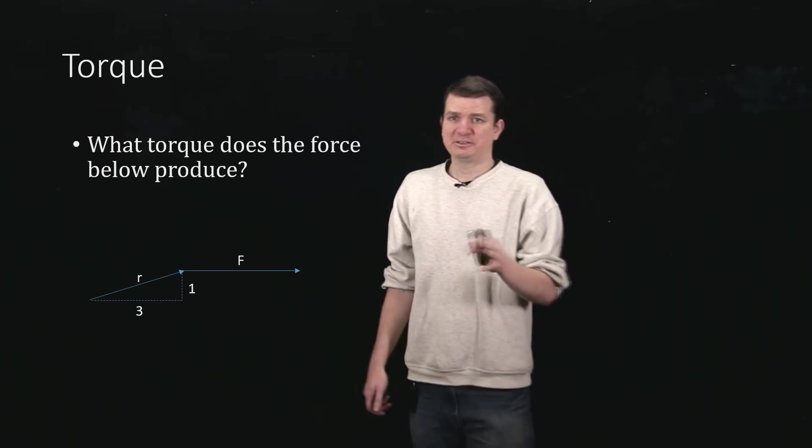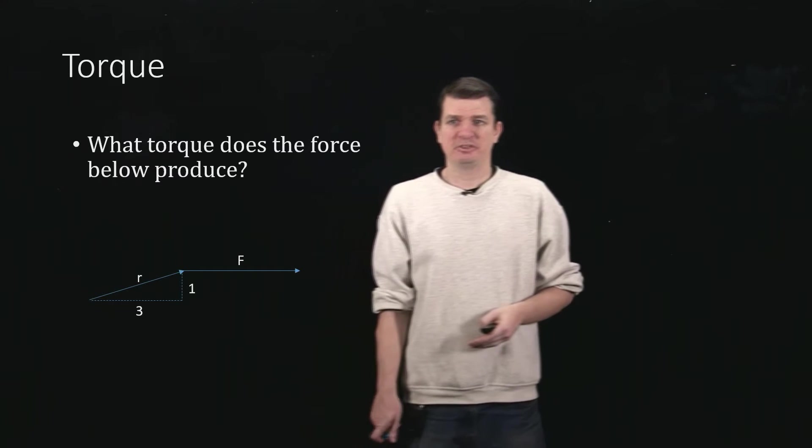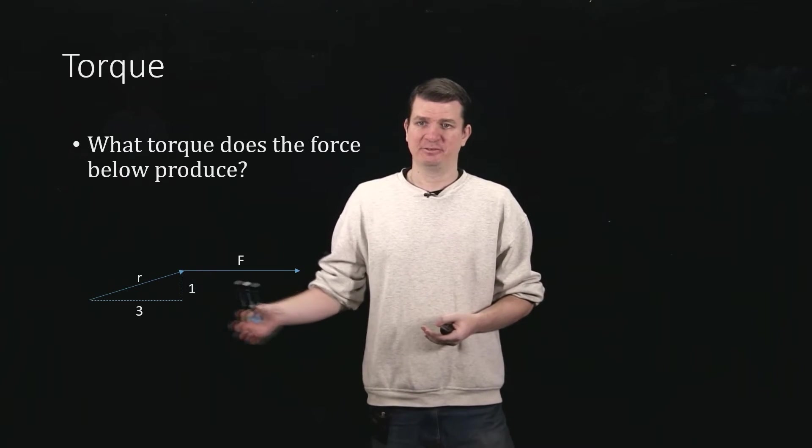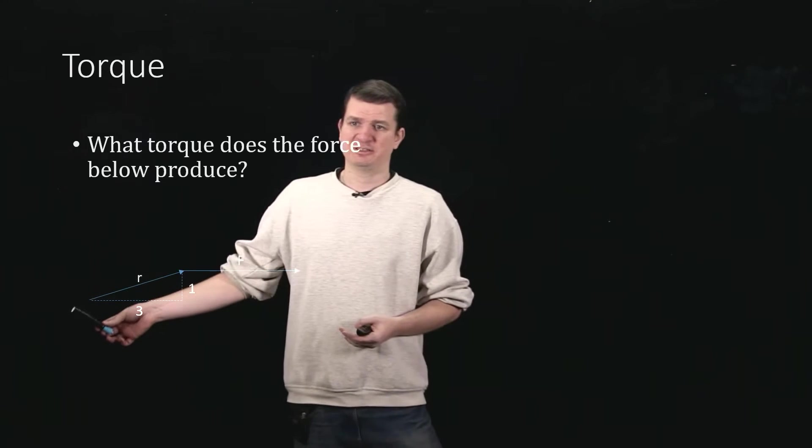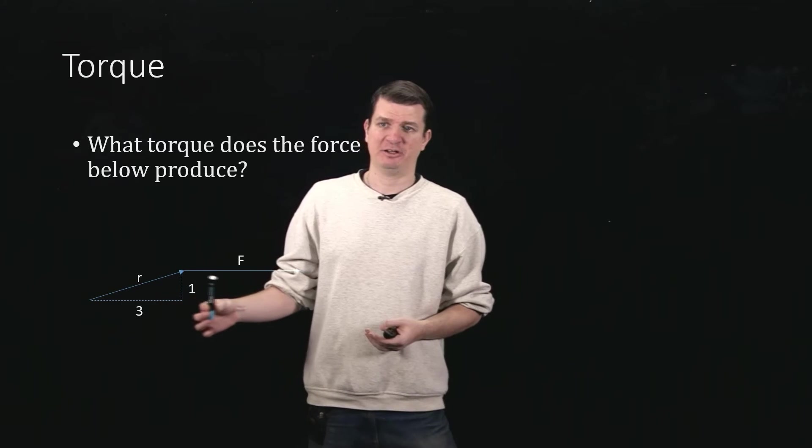So let's go a little step further and instead of just thinking about which one's going to be bigger, let's try and do a calculation. So officially, if we want to know the torque of this force F applied here, and there's some pivot point over here, so we've got a radius vector that looks like this, and then we apply our force there.